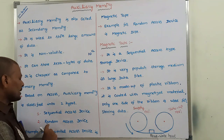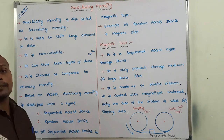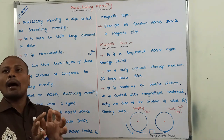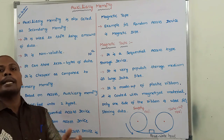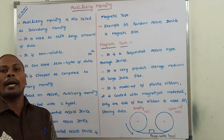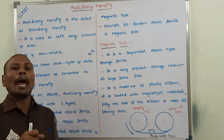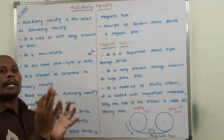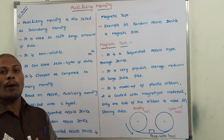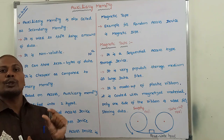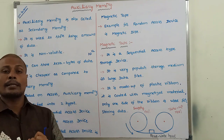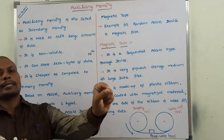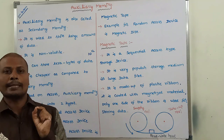The second type is random access device. We have to access whatever data we require — that data can be accessed randomly. Suppose there are five songs and we want to access the third song; directly, we can access the third song.